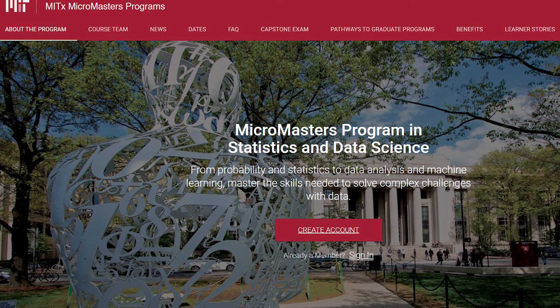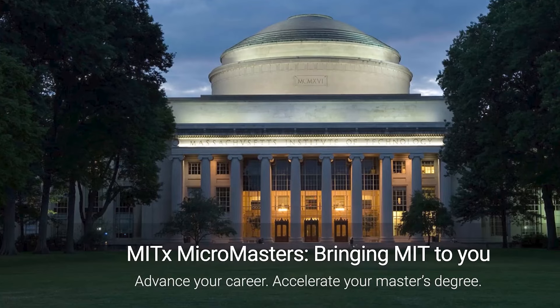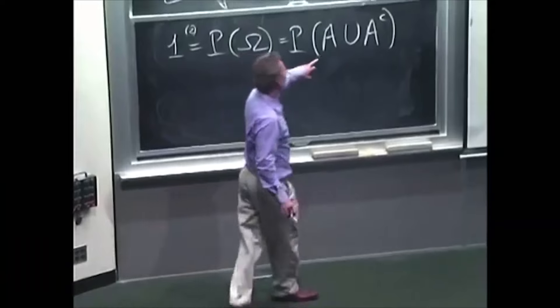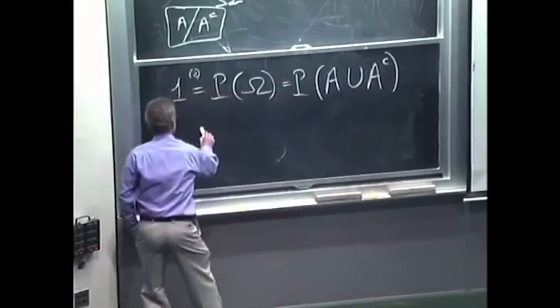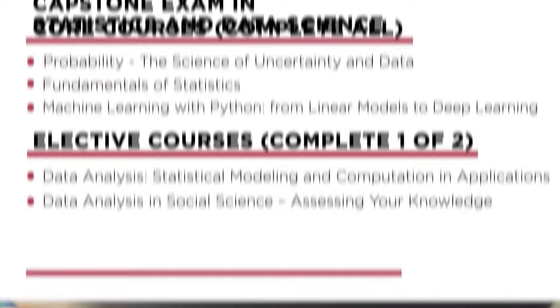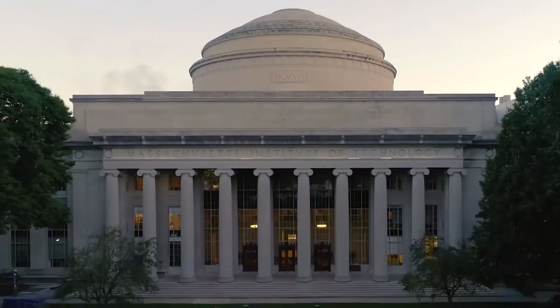Number three: MicroMasters Program in Statistics and Data Science. The third certificate on our list is the MicroMasters Program in Statistics and Data Science, offered by MIT on edX. This is a graduate-level certificate that comprises four courses and a capstone exam that cover the core concepts and methods of statistics and data science, such as probability, inference, modeling, machine learning, and data analysis. You will learn how to use Python and R to perform data analysis and visualization, as well as how to apply statistical and computational techniques to address real-world challenges and questions.